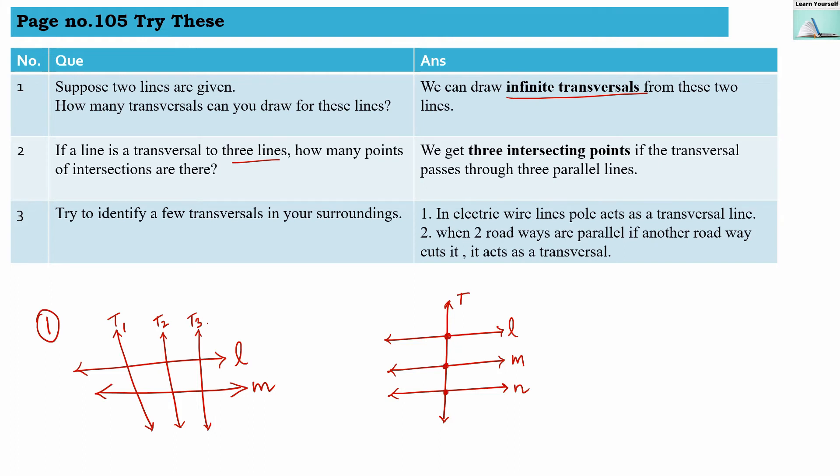Third question: try to identify a few transversals in your surrounding. So first, electric wire line poles act as a transversal line. Second, when two roadways are parallel, if another roadway cuts it, it acts as a transversal. So these are some of the examples for transversal.